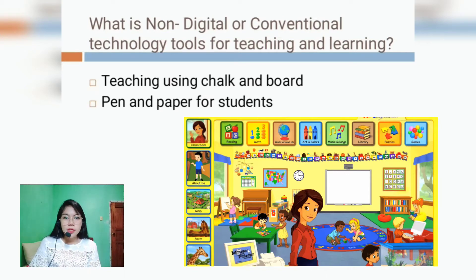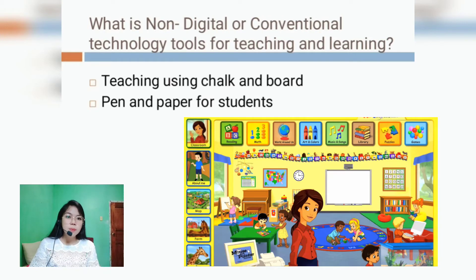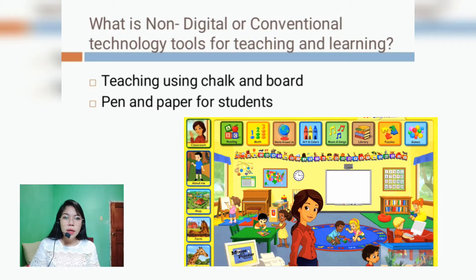Examples of these are: writing board, diorama, nature table, flip chart, zigzag board, board display, wall display, and rope and pole display board. We are going to talk about each of these examples.